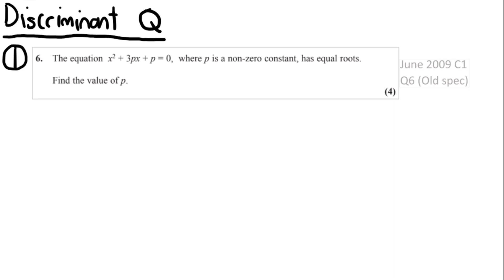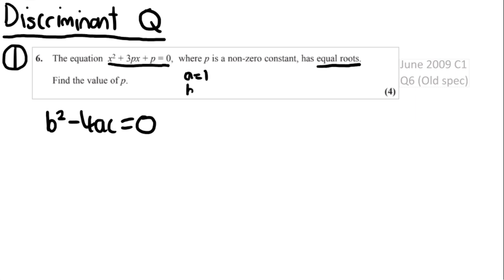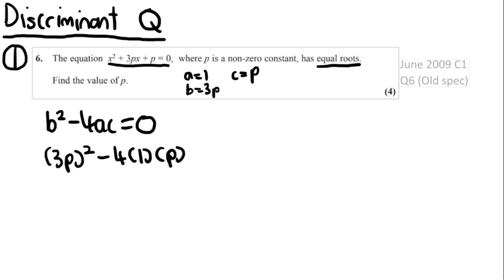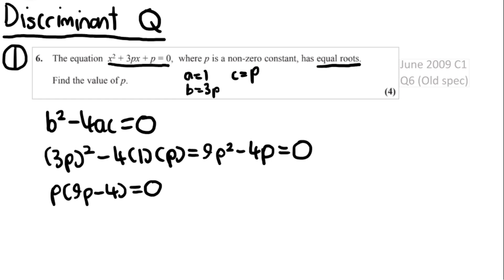This is a very typical exam question — it's quite algebra-heavy. The key thing to note is that it says the equation has equal roots, meaning one root, so you know that b squared minus 4ac equals 0. Identifying a, b, and c from the ax squared plus bx plus c equals 0 form gives a equals 1, b equals 3p, and c equals p. Substituting into the discriminant: b squared is 3p squared, minus 4 times 1 times p, giving 9p squared minus 4p equals 0. Factorising: p times 9p minus 4 equals 0. This gives two possible answers — p equals 0, but since the question states p is a non-zero constant, p cannot be 0.